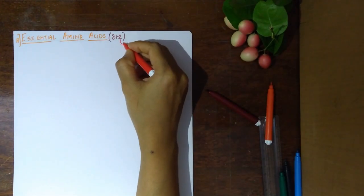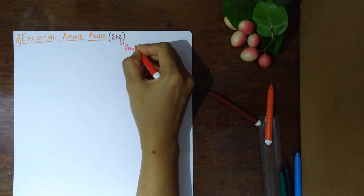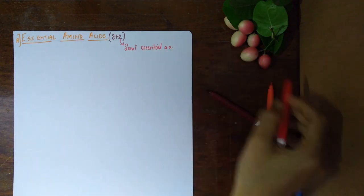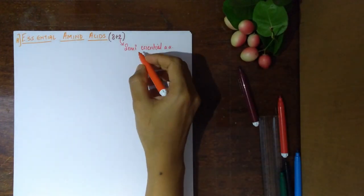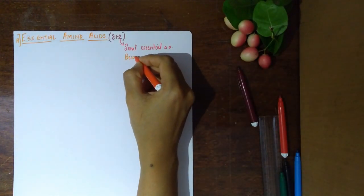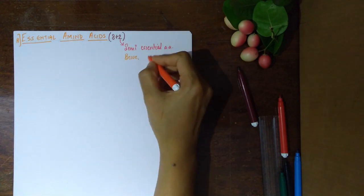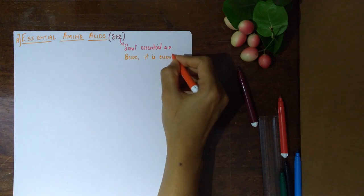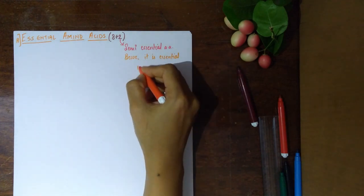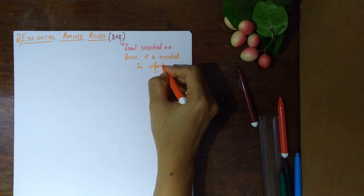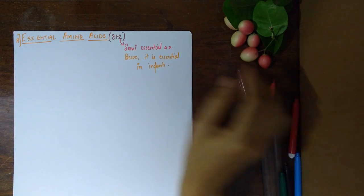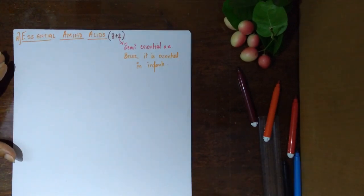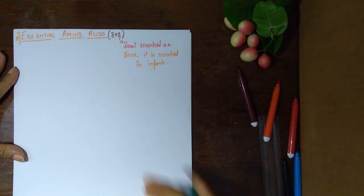This 2 stands for the semi-essential amino acids. Why are they called semi-essential? Because they are essential in infants — in the early childhood stage you require these two amino acids — but in adulthood the body can synthesize them on its own.